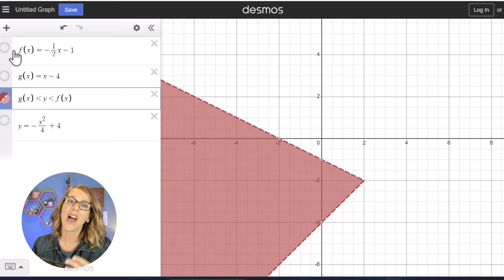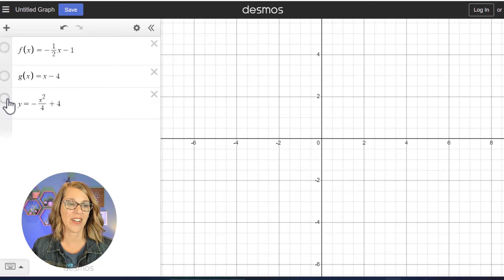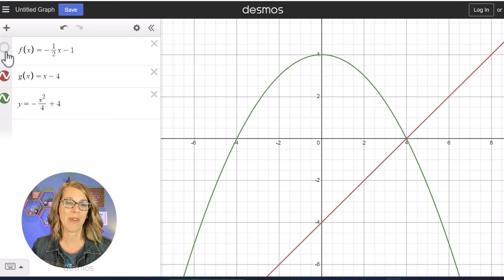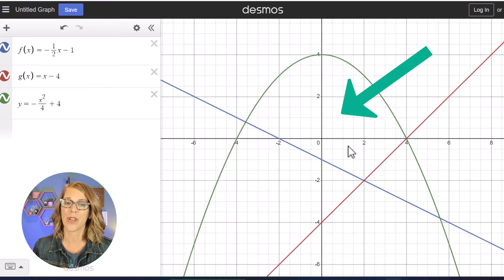Now you might wonder how we can do this with multiple shapes. I'm gonna get rid of this shaded area here and I'm gonna click on this parabola that I've got and my other two lines. Let's say this time I want to shade in between that V shape that's on the bottom and the parabola that's on the top. So I want this shape right here.